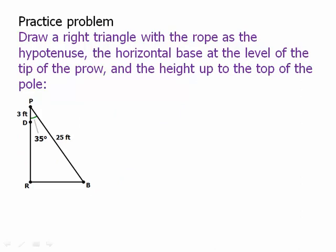Okay. Let's think about this. We're going to draw a right triangle with the rope as the hypotenuse, the horizontal base at the level of the tip of the prow, which is slightly above the water,